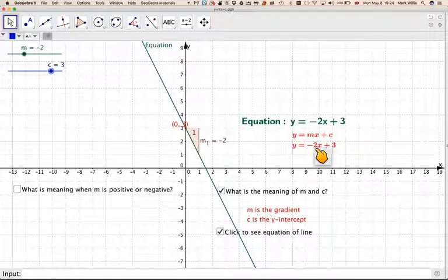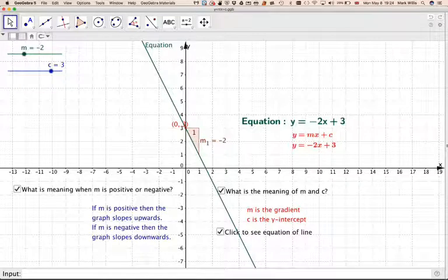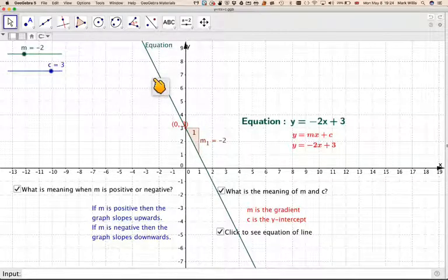Gradient is minus 2. Minus 2 divided by 1. We don't write the divide by 1 in. And c is going to be equal to 3. And what does it mean if m is positive or negative? If m is positive, the graph slopes upwards. And if m is negative, the graph slopes downwards. So as we go across the page, this is going downwards. So this will have a negative gradient.